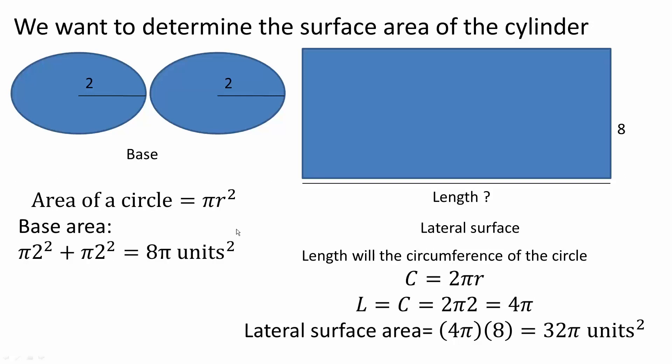Now we need to determine the lateral surface area. We need to first get the circumference, because the circumference is equal to this length right here. So 2πr, r is 2, so 4π.